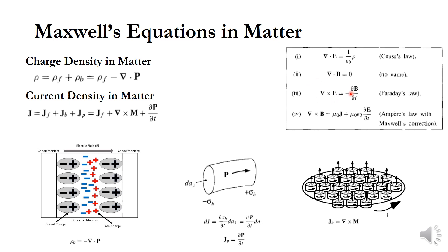The fourth equation, Ampere's law with Maxwell's correction, states that J and the change in electric field both induce a curly magnetic field. So these are the four Maxwell's equations.